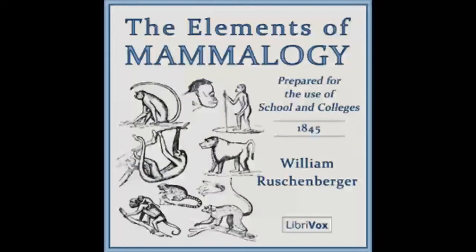Division of the Animal Kingdom into Branches. In ranging animals according to their different degrees of resemblance, and according to the differences more or less considerable which distinguish them, we first remark that there exists in the animal kingdom four principal types according to which nature seems to have constructed all these beings. They are divided into four great divisions or branches. The following table presents the principal characters which distinguish these great divisions of the animal kingdom.